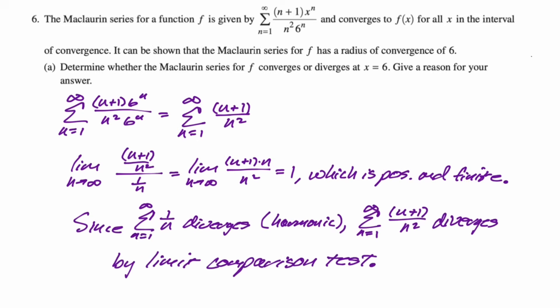So I just need to write that up. I'm going to say, since the sum of 1/n diverges (it's harmonic, or you could say p equals 1), the series that we found diverges as well by the limit comparison test. And I think that's how I would handle that problem. Let's take a look at the next one.